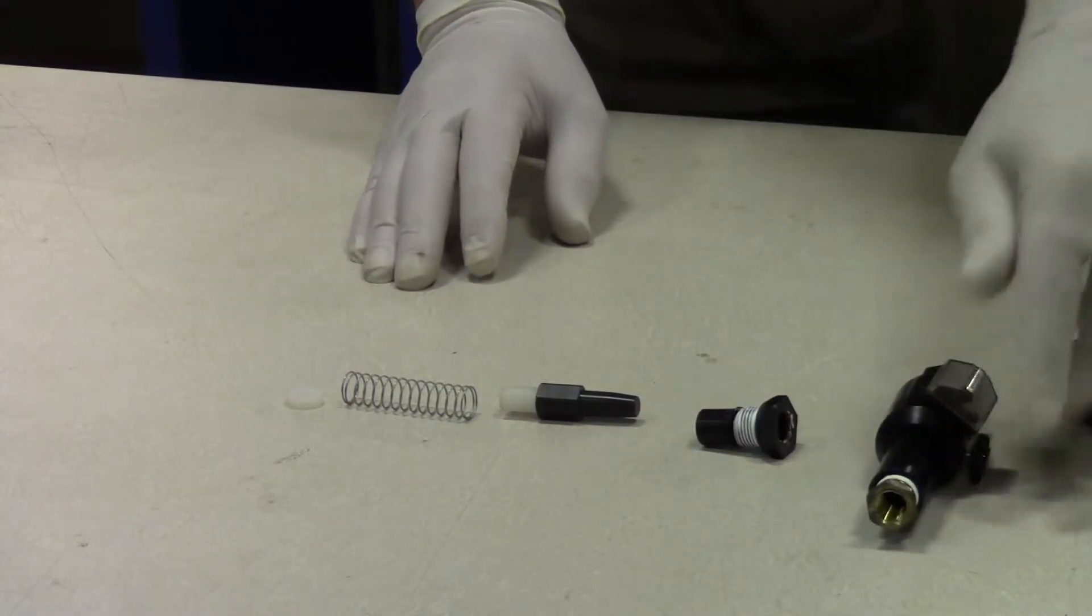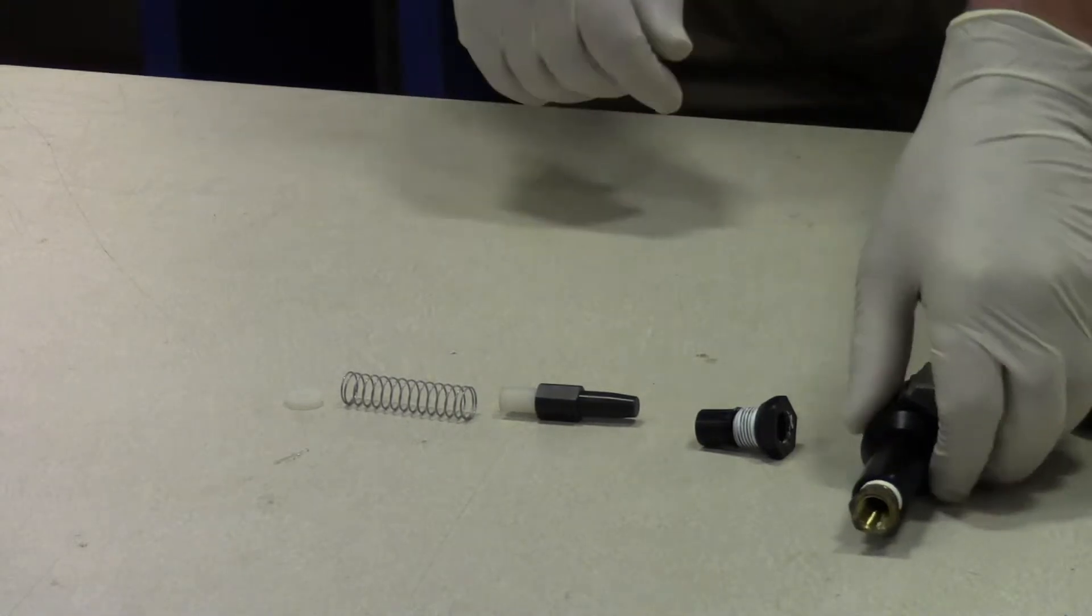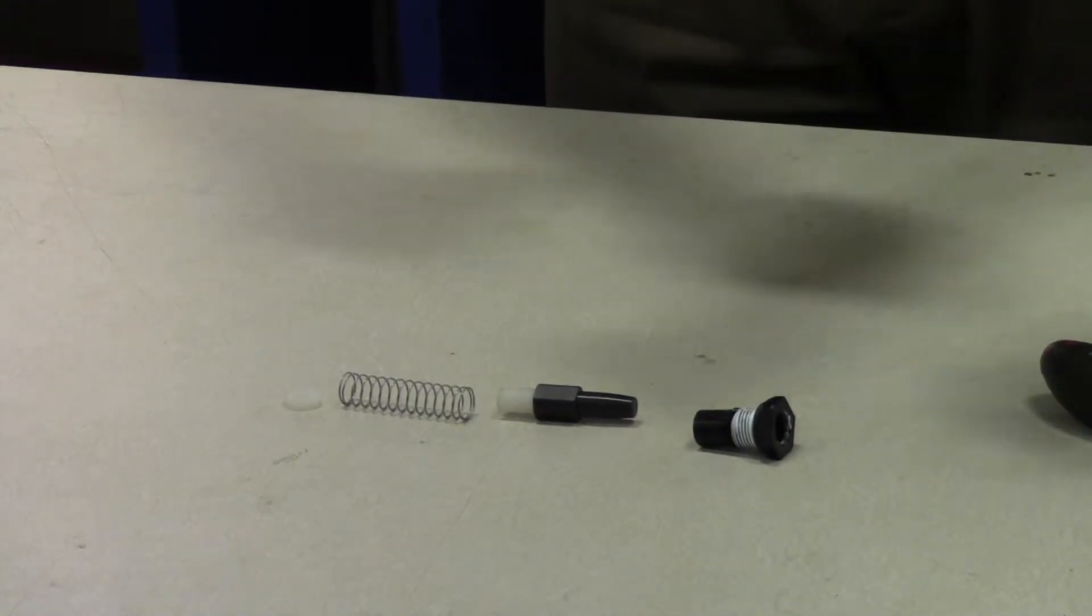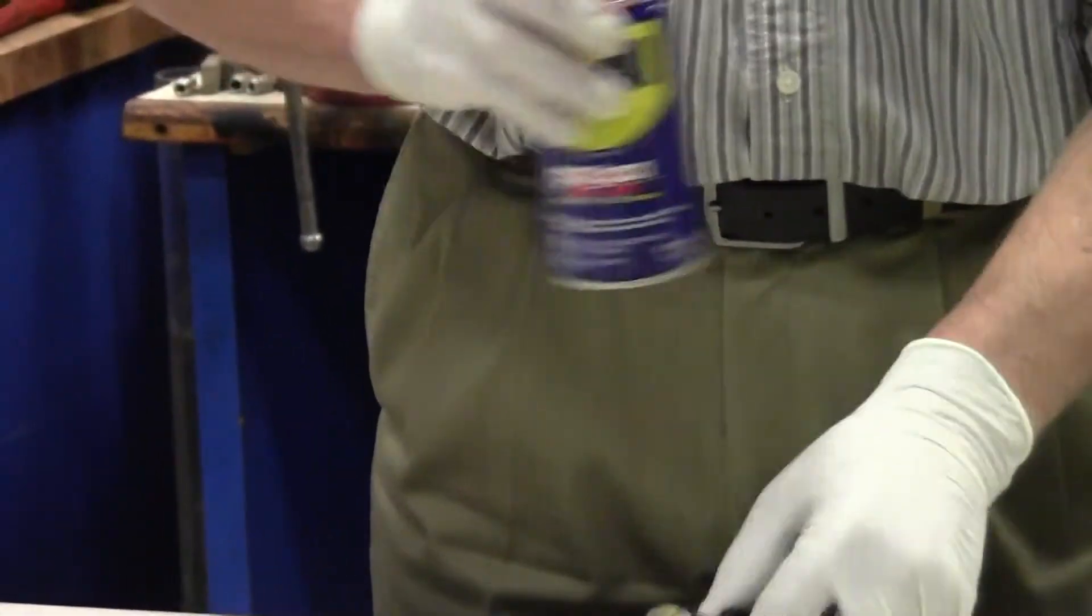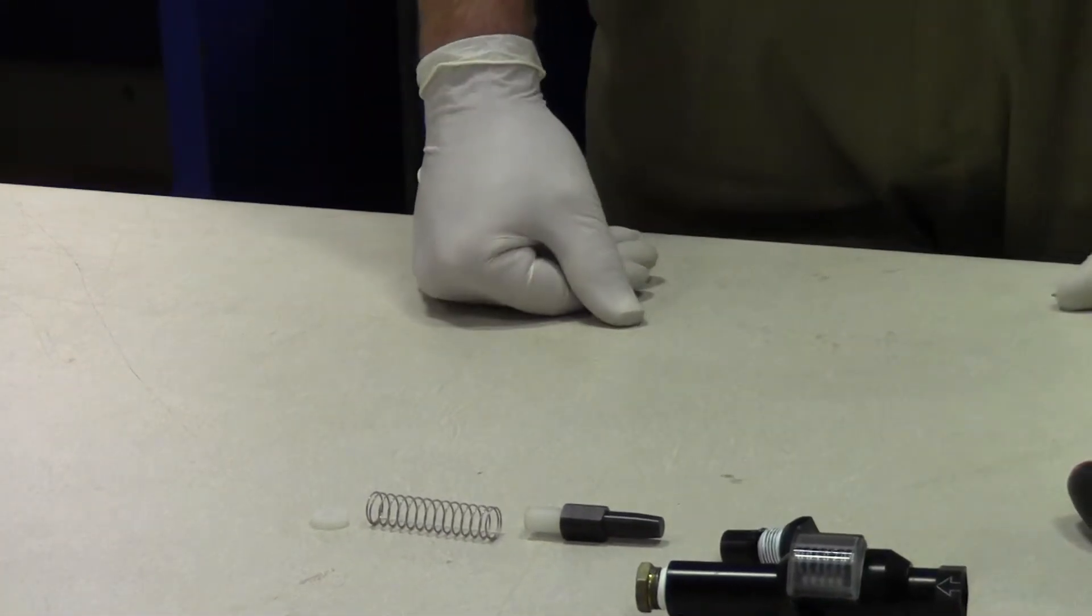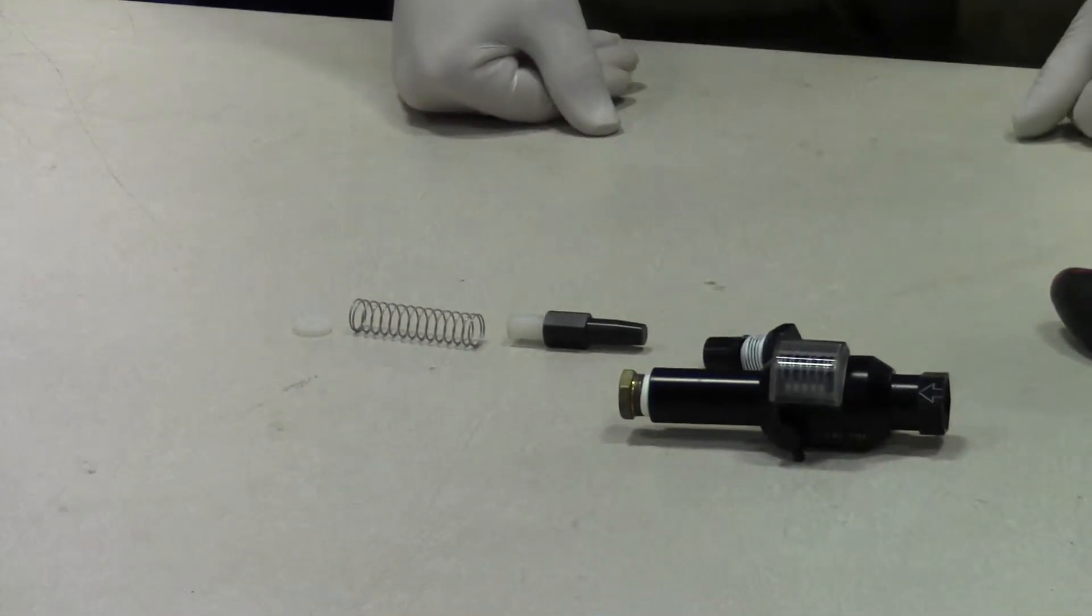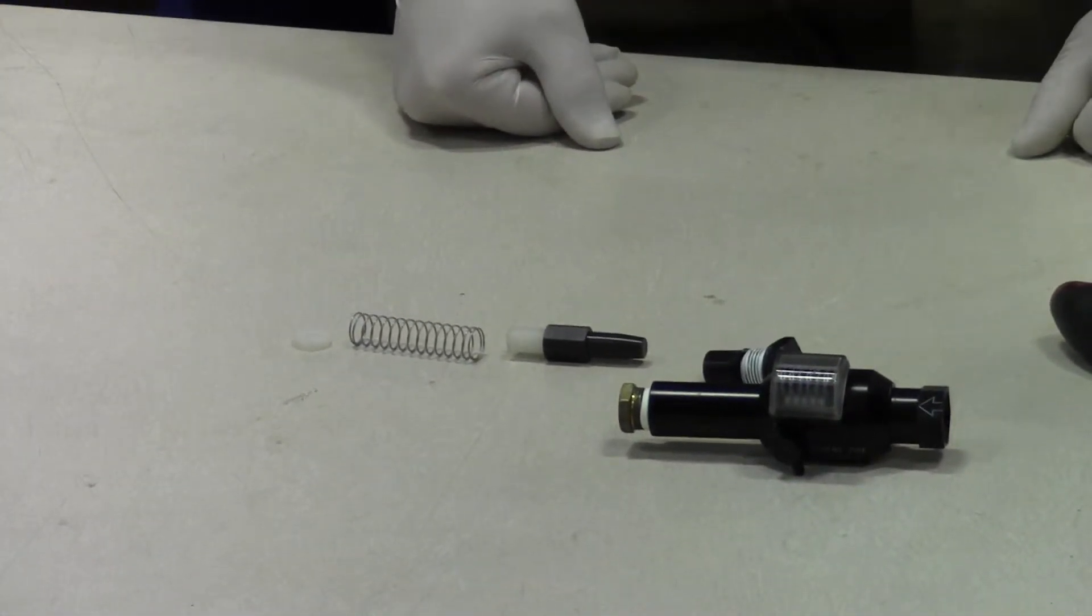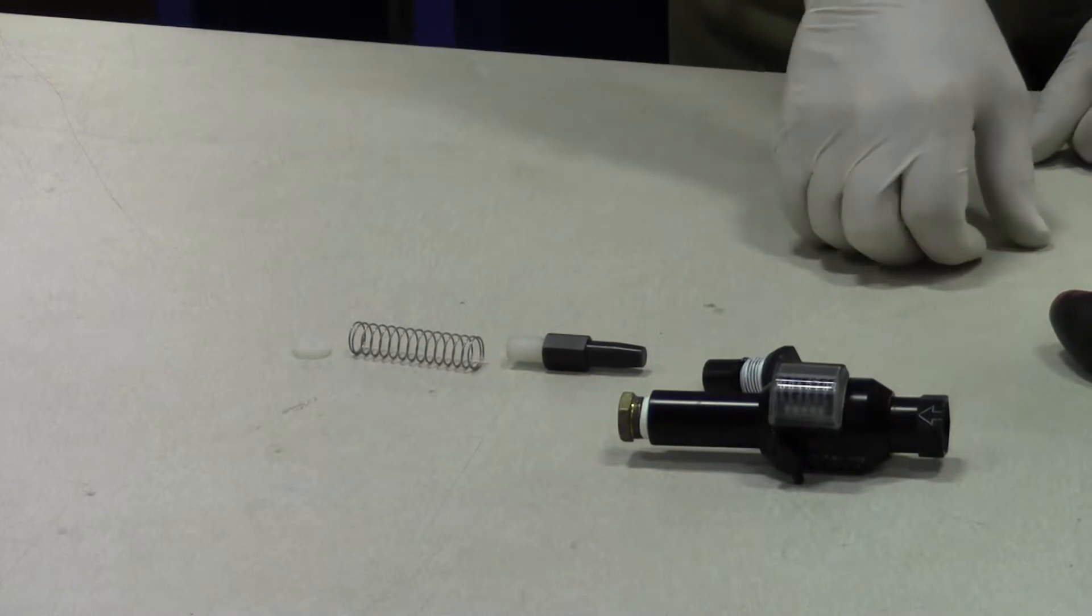If the shuttle does not move, you can spray the inside of the counter barrel with some WD-40 or any other type of lubricant that you have on hand. After applying the lubricant and leaving the counter sit for several minutes, you can now try to remove the shuttle.